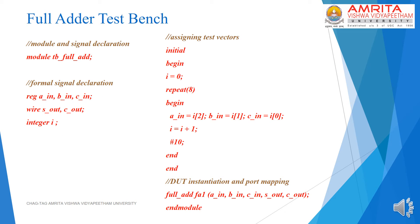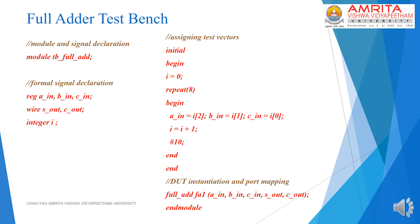In the full adder test bench, we have introduced a new keyword: repeat. This is used for implementing a loop. Using the repeat loop, we assign test vectors starting from the vector 0,0,0 to the vector 1,1,1 respectively to the inputs A_in, B_in, and C_in of the full adder. The next step in the hierarchy logically will be a ripple adder.